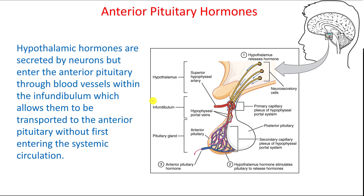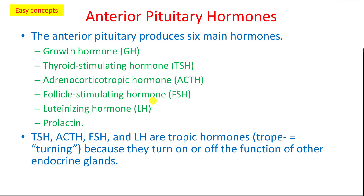The main hormones secreted by the anterior pituitary gland are the growth hormone, thyroid stimulating hormone, adrenocorticotropic hormone, follicle stimulating hormone, luteinizing hormone, and prolactin.